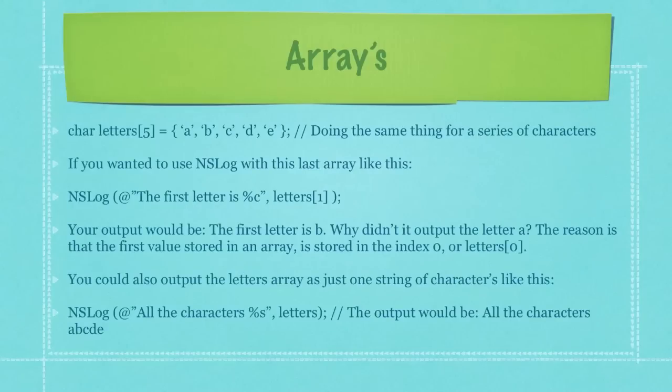Here I'm doing the exact same thing, except I am using a series of characters instead of a series of integers. And if you wanted to use NSLog with this last array, you would just follow my example as you can see here in the third bulleted item. Even though I am using an array, I am still going to use the percent followed by the letter C because this does contain character data. And in this specific example, your output would be the first letter, which is B. You may ask yourself, why didn't it output the letter A? The reason is that the first value stored in an array is stored in the index zero. You could also output the letters array as just one string of characters if you followed the example as you see here in the last bullet item. Here you can see specifically that I use the percent sign followed by the letter S and then I use the variable name letters without brackets following it. This would output A, B, C, D, E to the user's screen if you specifically called this NSLog function.